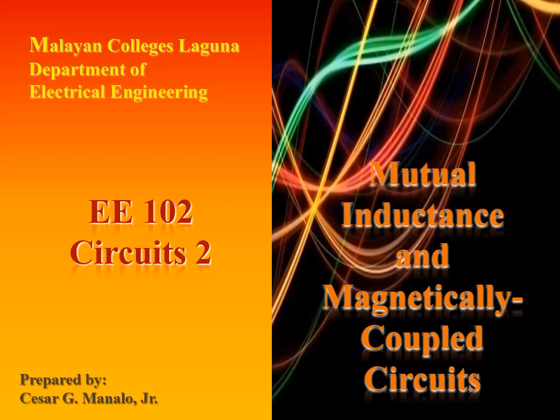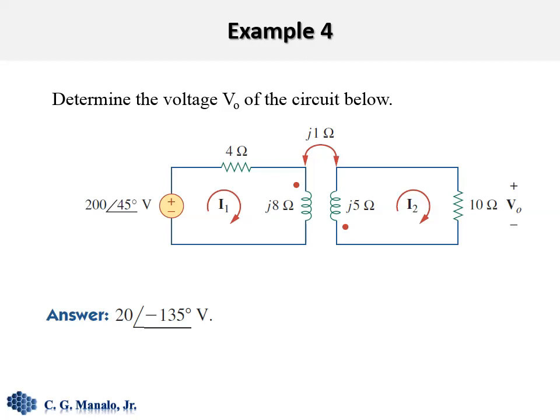In this video, let us solve some problems related to magnetically coupled circuits. In this problem, we are asked to determine the voltage V0 across 10 ohms. This circuit has two parts — the one on the left and the one on the right — that are physically isolated from each other. However, although they are physically isolated, their inductors represented by j8 ohms and j5 ohms are magnetically coupled, meaning one inductor induces a voltage on the other. This coupling is due to the mutual inductance between the two inductors, represented by the inductive reactance j1 ohms.